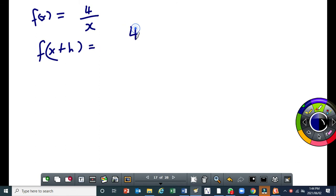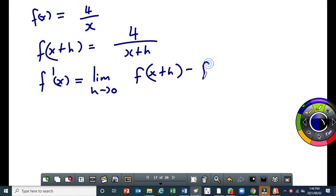And that will be equal to 4 divided by x+h. So we are replacing this x by x+h. That's all. Then we write our formula: f'(x) is equal to the limit as h tends to 0 of f(x+h) minus f(x) all over h.